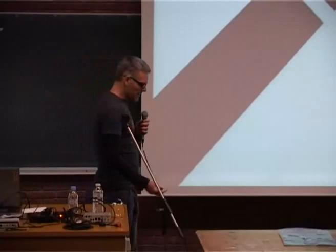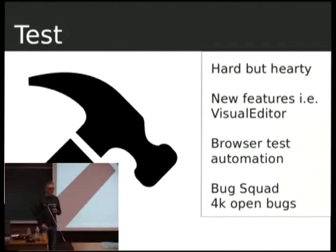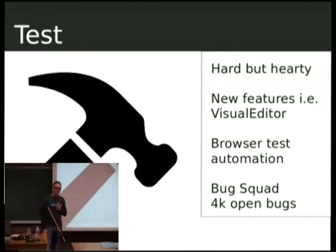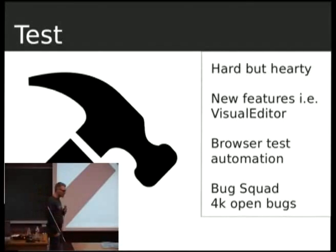You can also get involved in testing. Testing is usually not just an easy entry point for non-developers to get closer to development. It's also that, if you're a good developer, you should work on things that can be improved. And a way to know what can be improved is by doing testing. So we do testing of new features coming to Wikipedia — for instance, the visual editor.